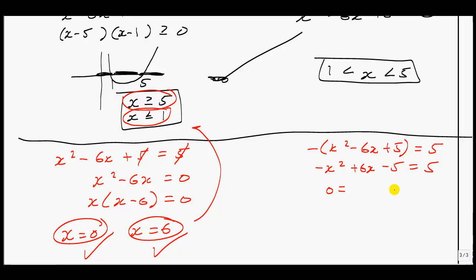So we end up getting negative x squared plus 6x minus 5 is equal to 5. I will gather my like terms onto the right-hand side, so I can keep my x squared positive. This gives me x squared minus 6x plus 10.